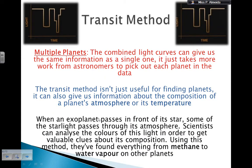So multiple planets is actually quite good for multiple planets. And again, another example in here. The combined light curves can give us the same information as a single one. So it just takes more time for us to pick up and pick out which planet is in the data, which planet is contributing on how much on that dip in the light curve.